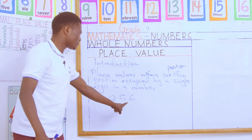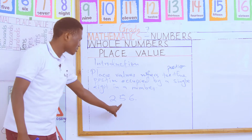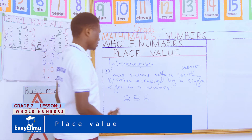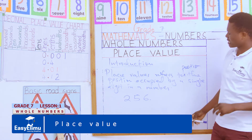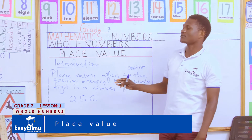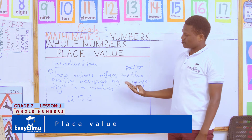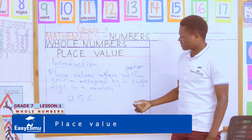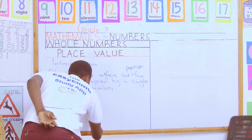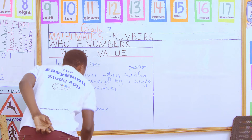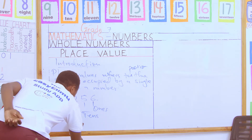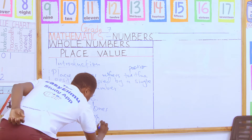You give the mathematical position that a particular digit occupies in the number. In our previous grade six classes, we discussed place values from ones up to hundreds of thousands. In grade seven we are going to go all the way up to hundreds of millions. Using 256 as a quick review: the first digit 6 is ones, the second digit 5 is tens, and the third digit 2 is hundreds.